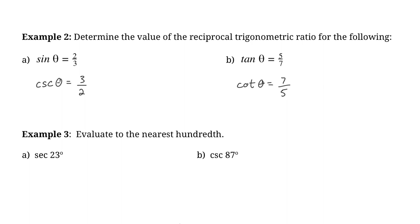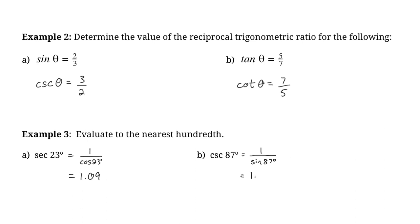In the next example, we're asked to evaluate to the nearest hundredth using a calculator. For the secant of 23 degrees — secant is the reciprocal of cosine — we do 1 over the cosine of 23 degrees, and that gives 1.09. For the cosecant of 87 degrees — the reciprocal of sine — we do 1 divided by the sine of 87 degrees, and that gives 1.00 rounded.